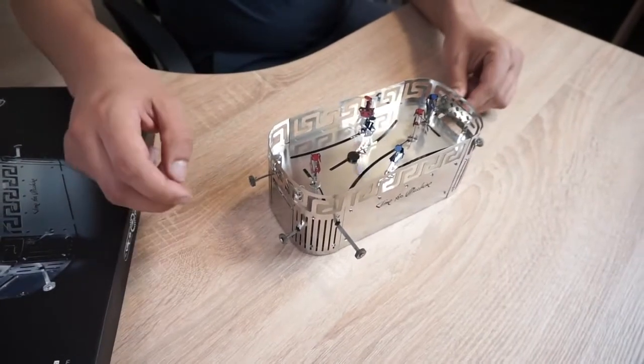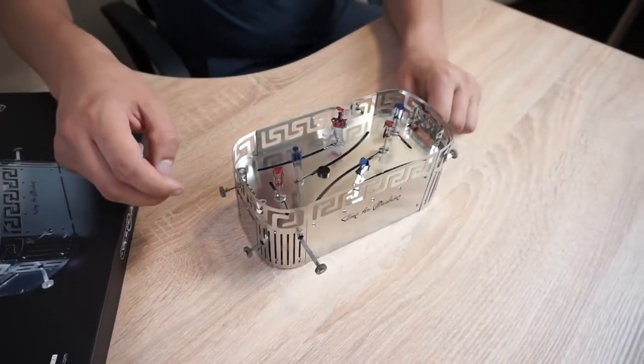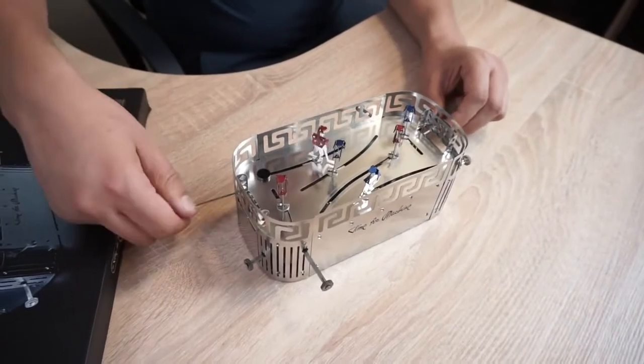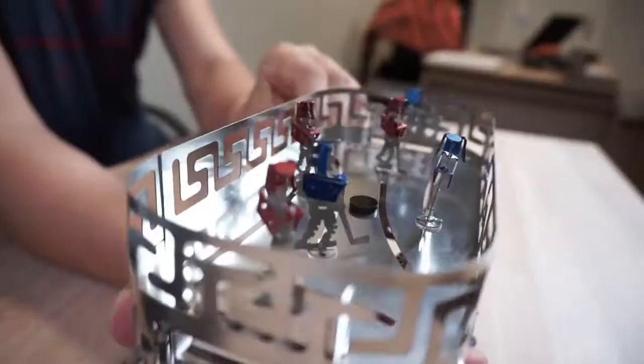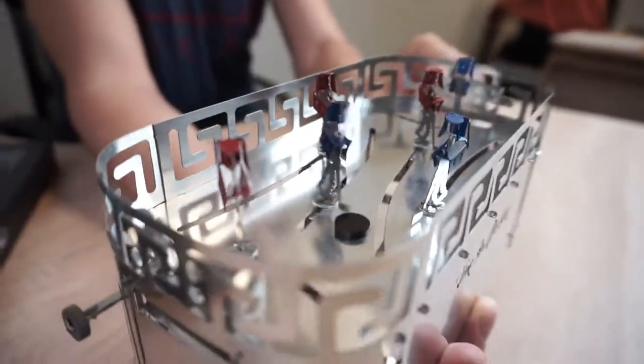In it, we have such medieval knights in armor for the hockey players. Colored metal is used here. There's a plastic puck. The whole model is made entirely of metal, except the puck.